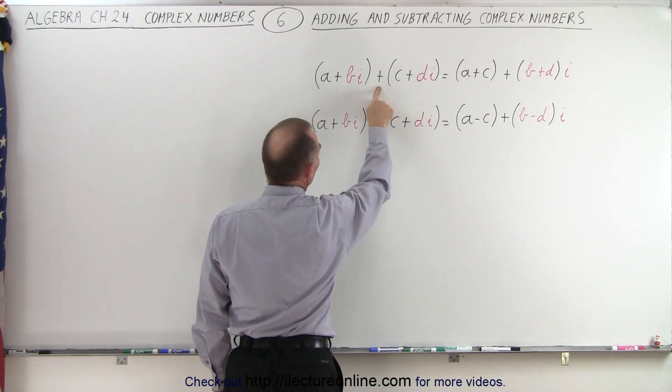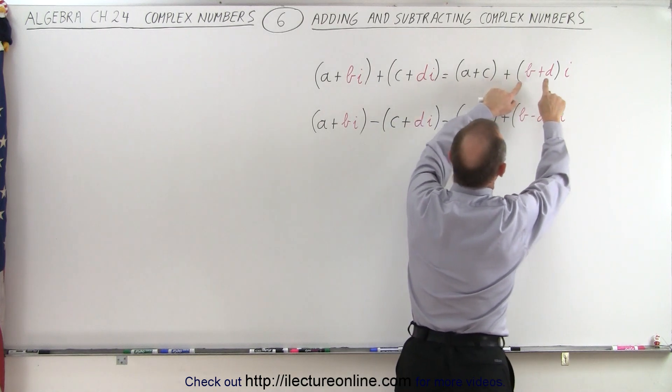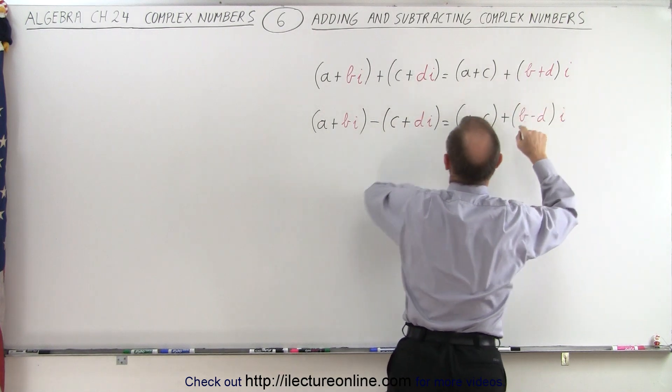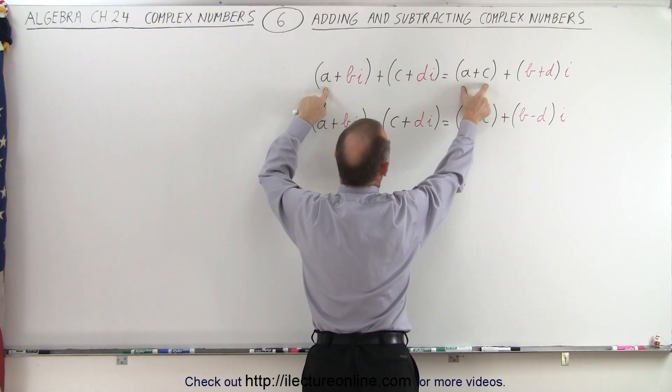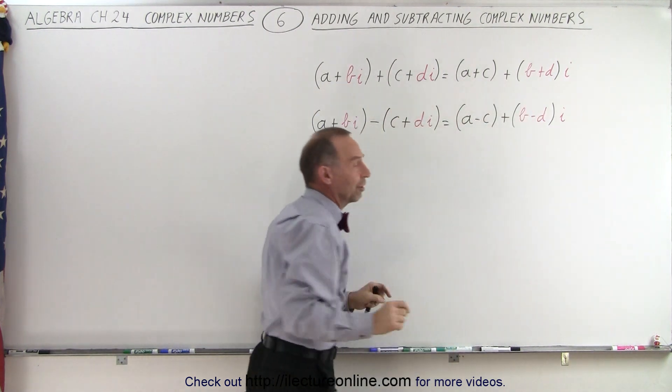In the case of adding the two complex numbers, we have to add the two real parts together and we have to add the two imaginary parts together. So that becomes A plus C as the real part and B plus D times I as the imaginary part.